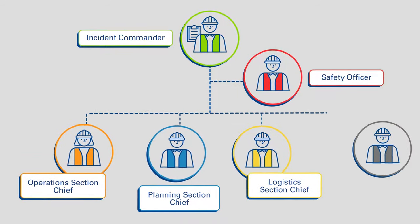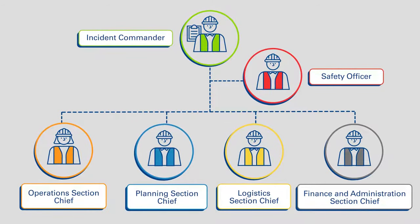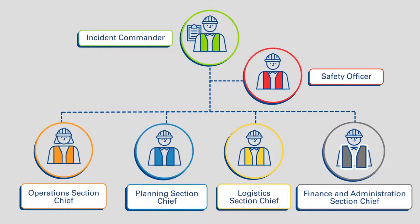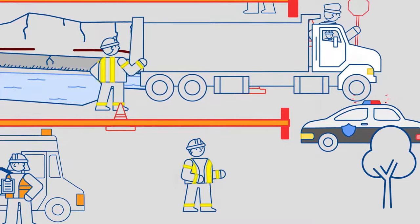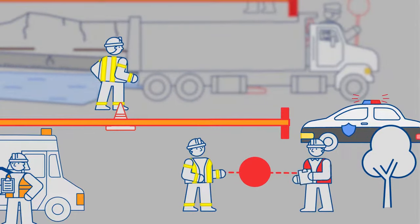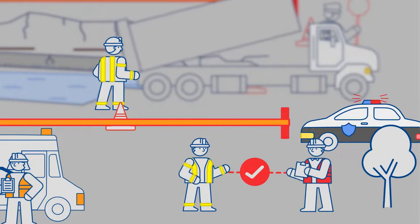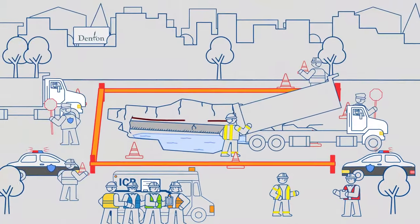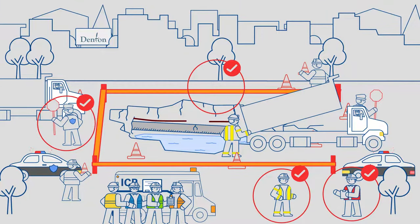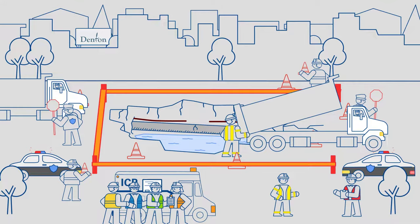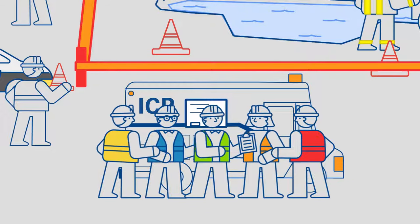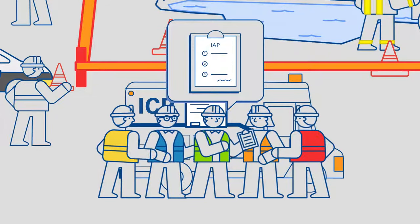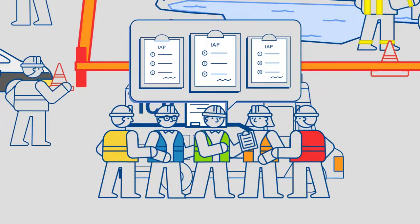In large, complex events, a finance and administration section chief may be assigned to manage finances on site — this person would wear a gray vest. As response efforts grow in size, there's an even greater need for personnel accountability. The safety officer ensures check-in procedures are in place to account for the well-being of all personnel. In all incidents, the first priority should always be the safety of first responders. As the incident unfolds, the incident commander regularly brings the management team together at the incident command post to review progress, revise incident objectives, and create new incident action plans each operational period until the incident is resolved.